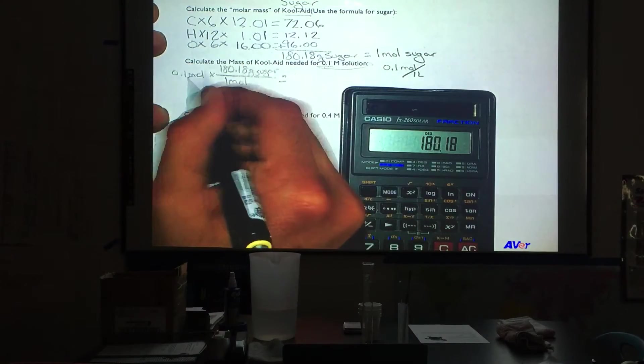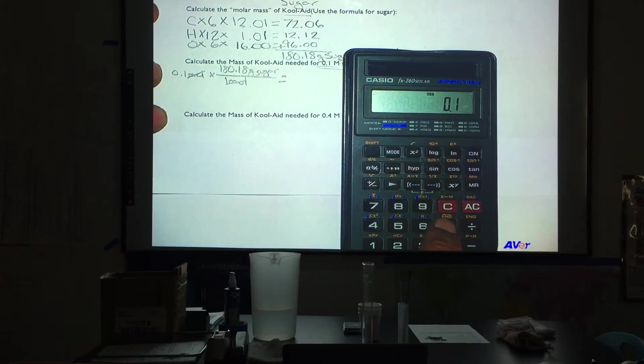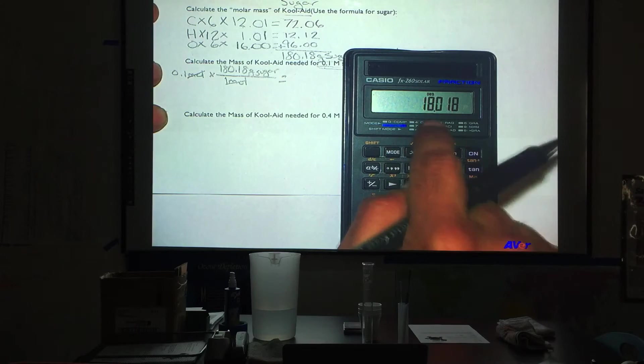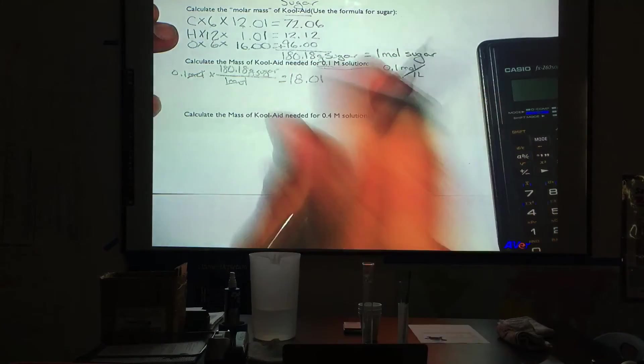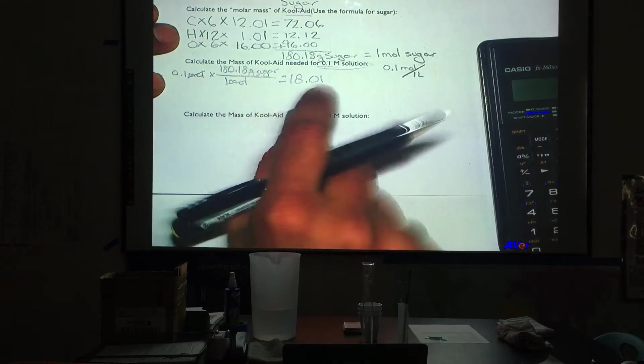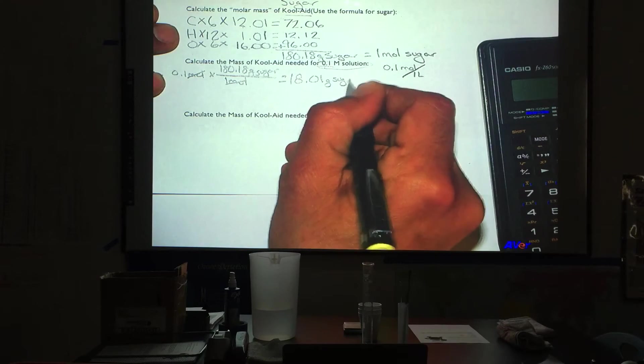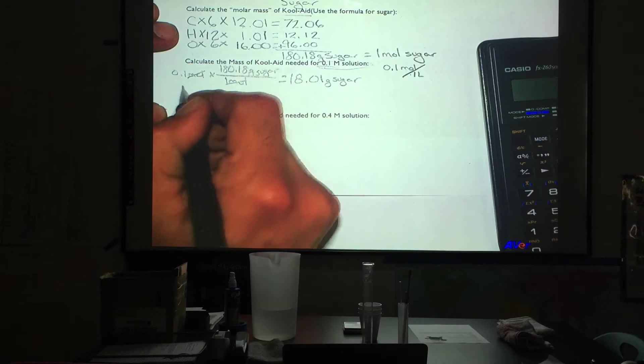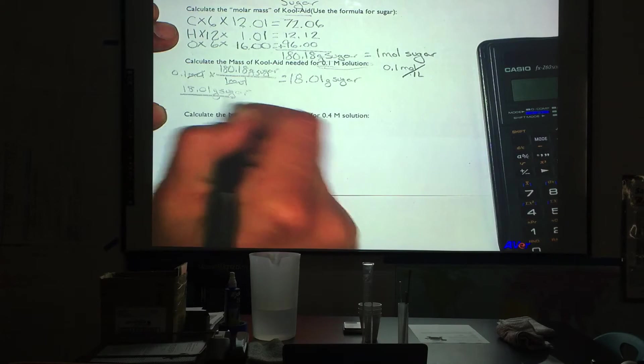From here I will see that moles cancel moles and I have 0.1 times 180.28. That gave me 18.01. So what this is telling me is that in a 0.1 molar solution I would have 18.01 grams of sugar in that one liter. So I will say 18.01 over 1 liter.